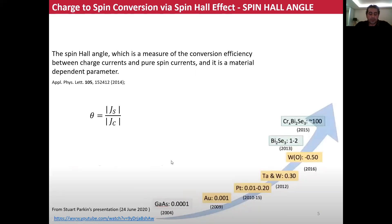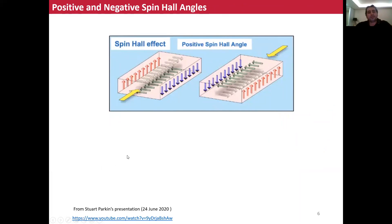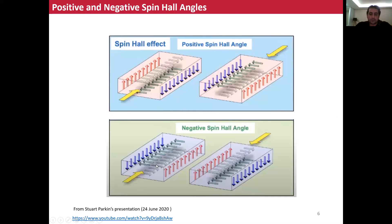After the observation of the spin hole effect in gallium arsenide, several studies have focused on finding which materials have how much spin hole angle, and several studies also focused on increasing this efficiency. You can find several exotic materials in the literature presenting 100% spin hole angle. There are also definitions of positive and negative spin hole angles: if the spin polarization at the edges is clockwise when we apply current, we call this a positive spin hole angle; if it is counterclockwise, we call this a negative spin hole angle.